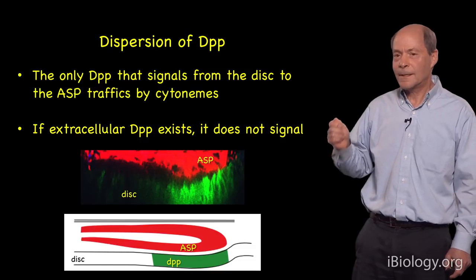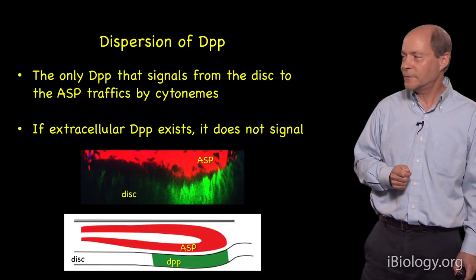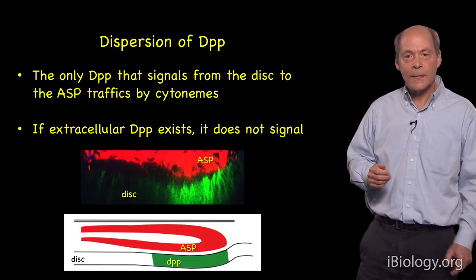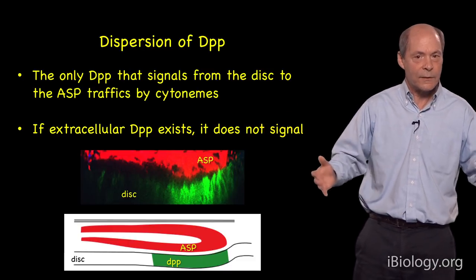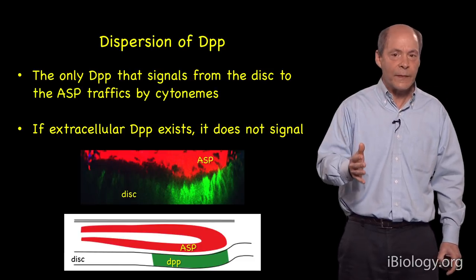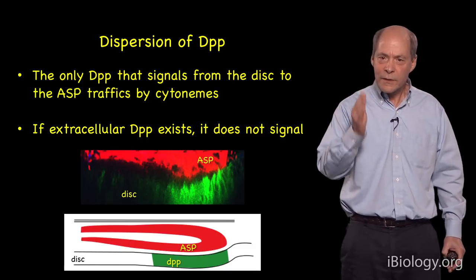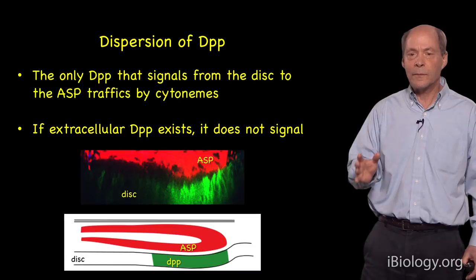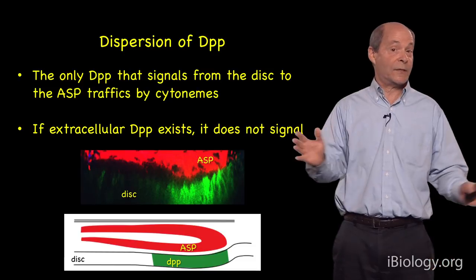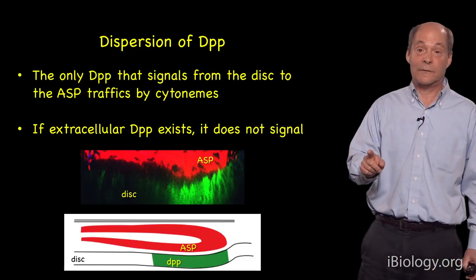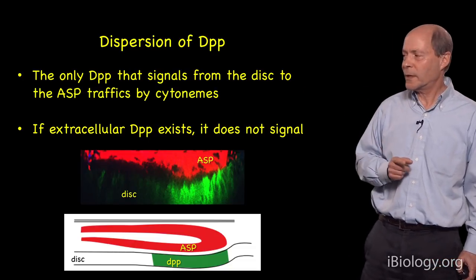This tells us that the only DPP that signals from the disc to the air sac primordium traffics by cytonymes. Even if extracellular DPP exists — and the wing disc continues to make DPP and develop normally — it doesn't signal. The only DPP that signals moves and depends upon these direct contacts.